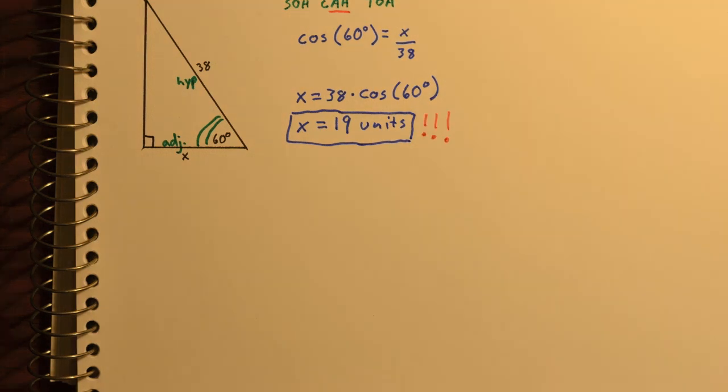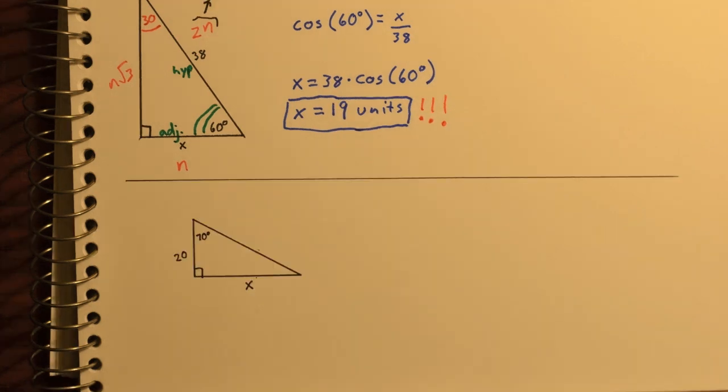Wait a minute. If we have a 60 degree angle in a right triangle, that means the other angle has to be 30 degrees. And so we have a special right triangle. So of course we would have the 2n side equals 38, which means n has to be 19.